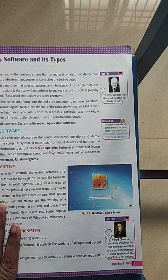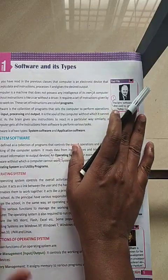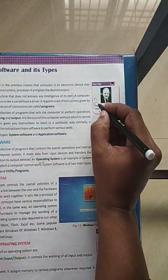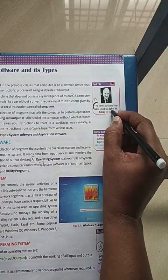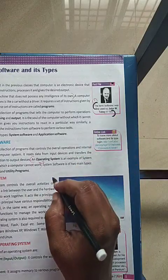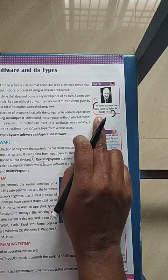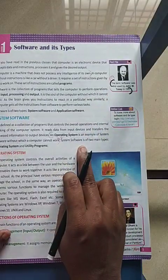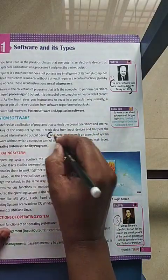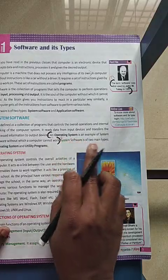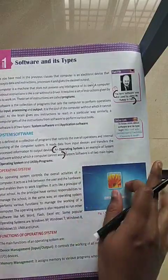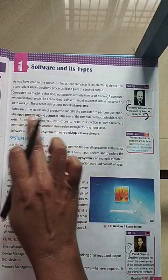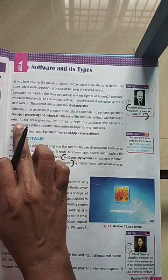Good morning children. Today we are going to see the book inside one marks. The first lesson's first one-mark question: the term 'software' was first used by John W. Tukey. The example for system software is the operating system.